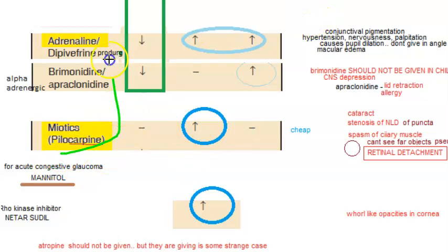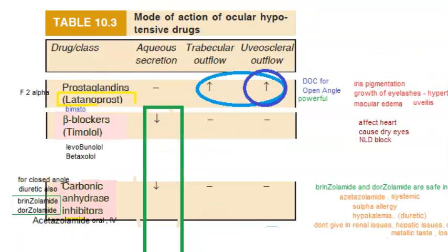So what drugs should you know? Latanoprost, bimatoprost, timolol, levobunolol, betaxolol, brinzolamide, and dorzolamide. What about acetazolamide? Acetazolamide has side effects, so they're not using it that much.